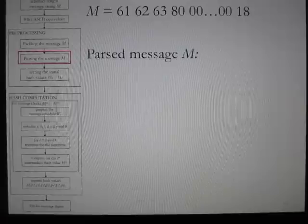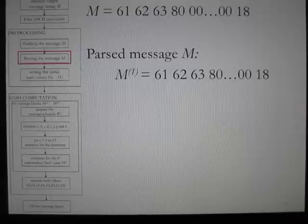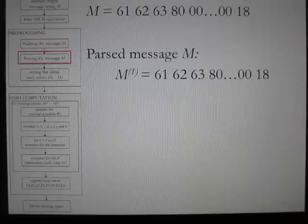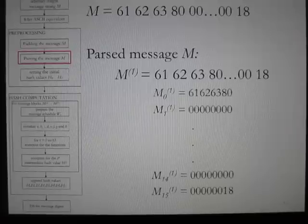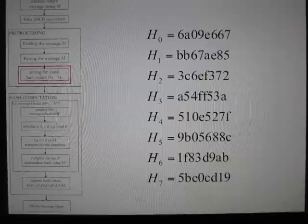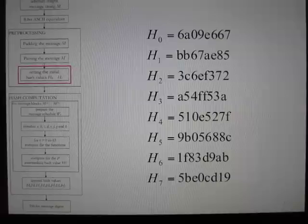The padded message in hex representation is now parsed into 512-bit blocks labeled M1 to MN. In this example, the padded message consists of one block. Since the 512 bits of an input block may be represented as sixteen 32-bit words, the first 32 bits of message block M1 are denoted M1 sub 0 through M1 sub 15. The hash values H0 to H7 are then initialized with the initial hash values for SHA-256 in hexadecimal.